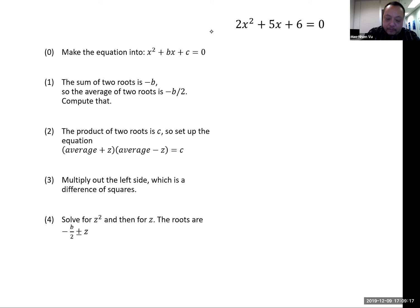I'm going to follow the same steps. First I divide by 2. I get x squared plus 5 halves x plus 3 is equal to 0. And so the average is the new b, negative the new b minus 5 halves, divided by 2. So that's negative 5 fourths.